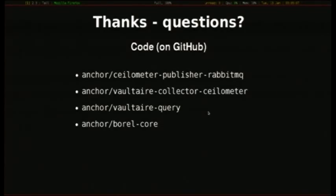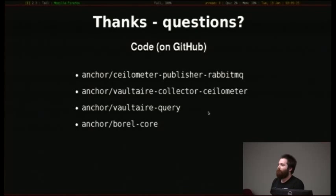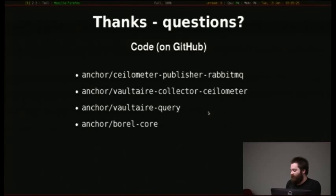So that's pretty much it. All of the code we've written — the publisher which gets data from Ceilometer to RabbitMQ, and the daemon which writes it to Voltaire — is available on GitHub, along with the query and metering APIs. Gnocchi itself is under the StackForge GitHub account.